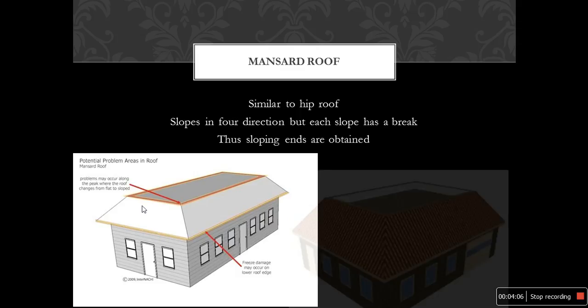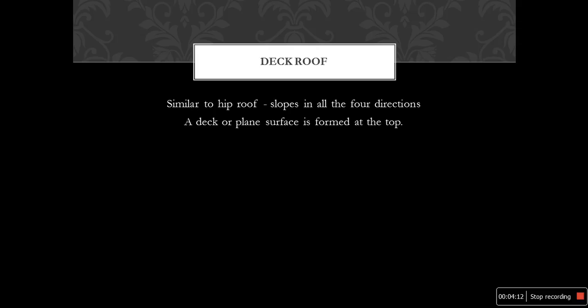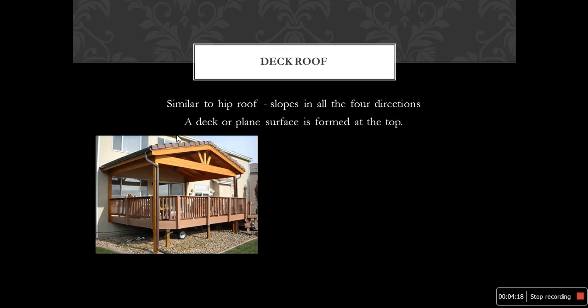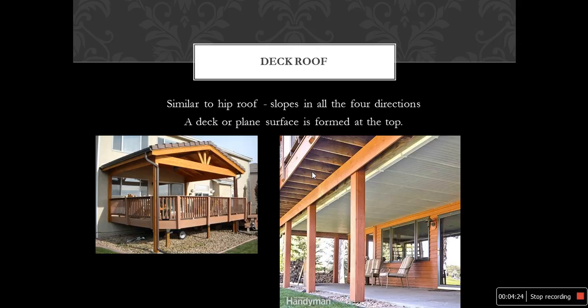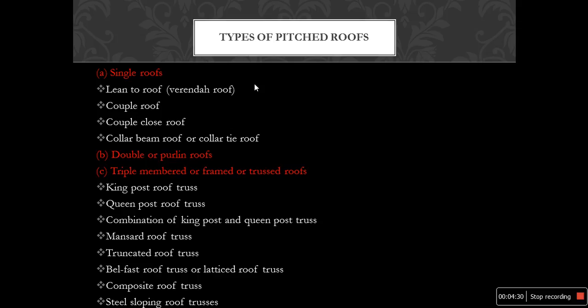Deck roof is similar to a hip roof — slopes in all four directions are provided, and a deck or flat plane surface is formed at the top. This is an example of a deck roof. So these are the different types of pitched roof.